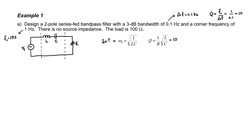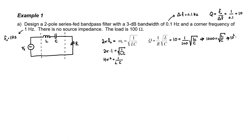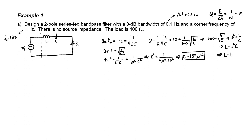The problem also tells us that the corner frequency is 1 Hz, so 2π times 1 Hz is just omega-naught. Let's square both sides of this equation; we now have a relationship relating L to C. We're told in the problem that the load is 100 ohms, so in the equation for Q we effectively have another relationship between L and C. Squaring both sides again gives a clear relationship between L and C, so let's substitute the inductance L into the equation. Solving for C, we find that the capacitor is 159 microfarads.